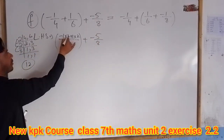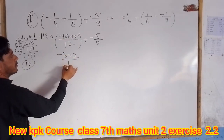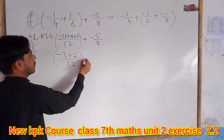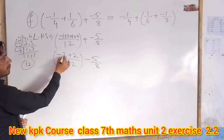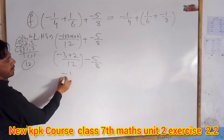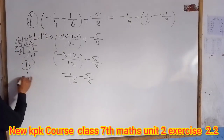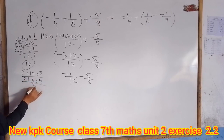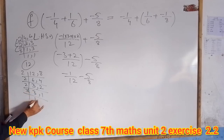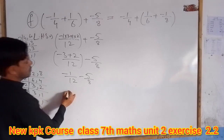3 is 3, 2 is 2, plus or minus, minus 5 divided by 8. Minus 3 is plus 2, minus 1 divided by 12, minus 5 divided by 8. 12 is minus 8. 2 is 6, 4; 2 is 3; 2 is 1. 2 is 4; 2 is 8; 8 is 8; 24. 8 is 24.